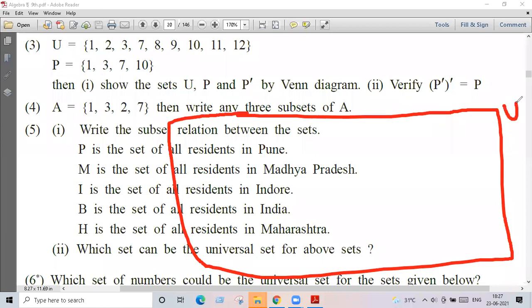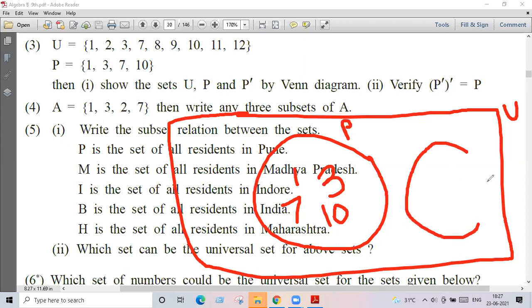This is your U. You generally have a rectangle. One, three. Now P is equal to one, three, seven, ten. Okay, this is your P. P prime, that means the complement of P. Complement of P is one, three, seven, ten. What remains? Two, eight, nine, eleven, twelve.